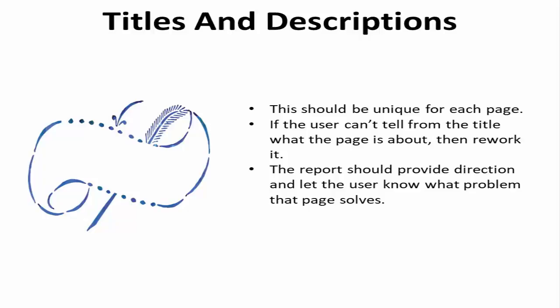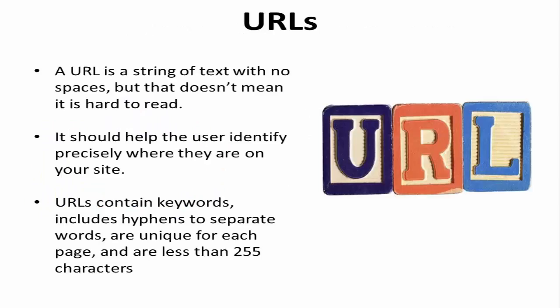A URL is a string of text with no spaces, but that doesn't mean it's hard to read. In fact, it should help the user identify precisely where they are on your site. For example, www.format.com/thisiscorrect tells the visitor what website they're on and which sub-pages they're viewing. URLs should contain keywords, include hyphens to separate words, be unique for every page, and be less than 255 characters.